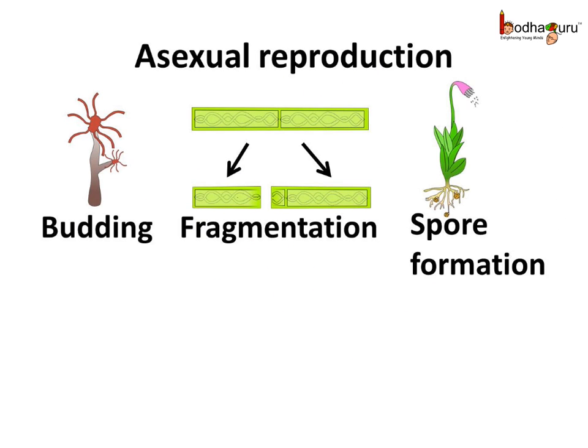All of these methods — the budding method, the fragmentation method, and the spore formation method — which involve simple division of the plant body into two or more parts or spore formation, are called the asexual reproduction methods. Let us now see another method of asexual reproduction in plants.